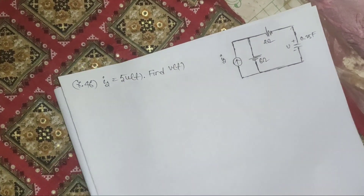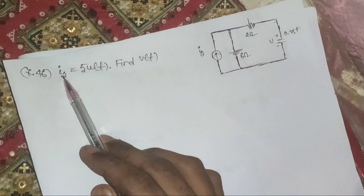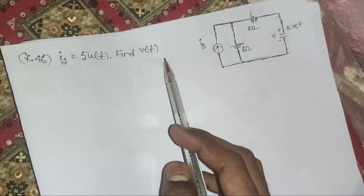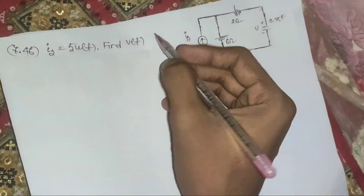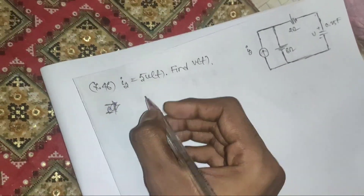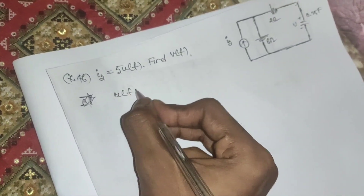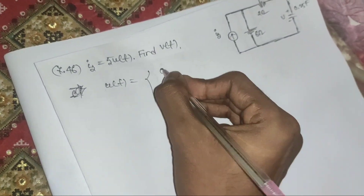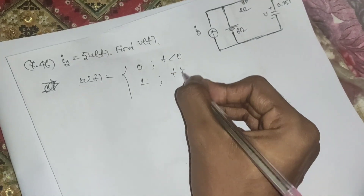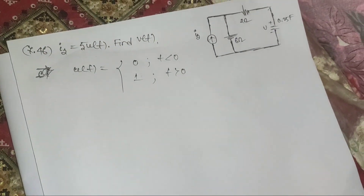In problem 7.46, a circuit is given and the value of i_s equals 5·u(t), where u(t) is in singularity form, and they are asking us to find v(t). Before heading to the problem, we know the singularity or unit step function: u(t) equals 0 when t is less than 0, and 1 when t is greater than 0.